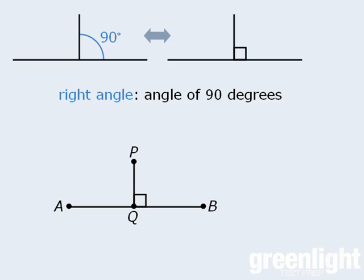If two lines or line segments intersect at a 90 degree angle, we say that they are perpendicular to one another.